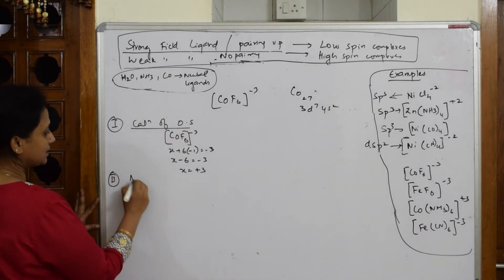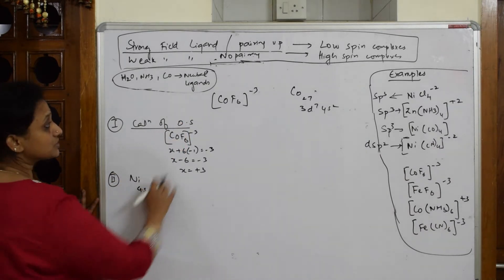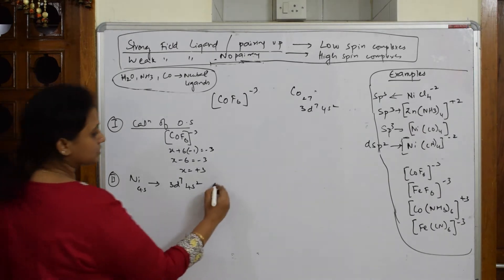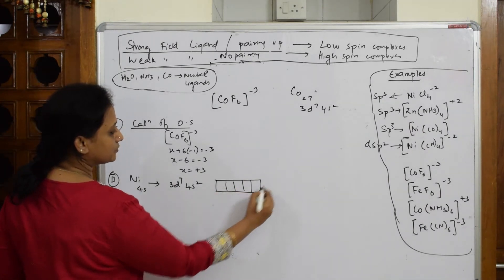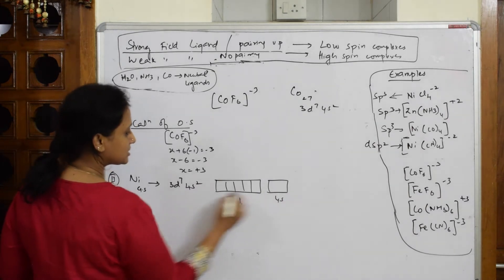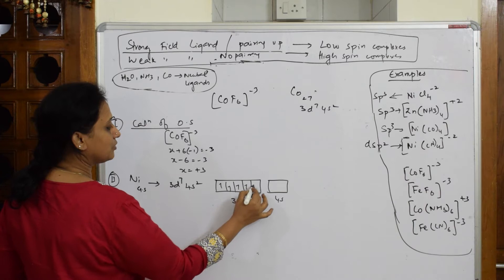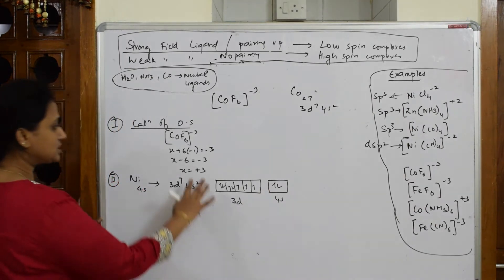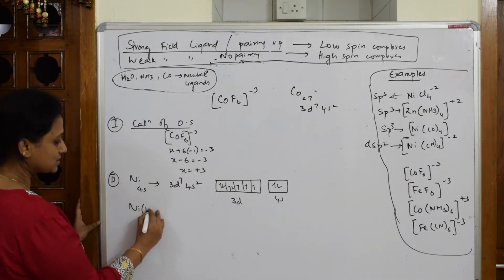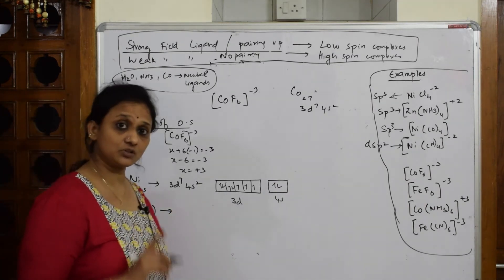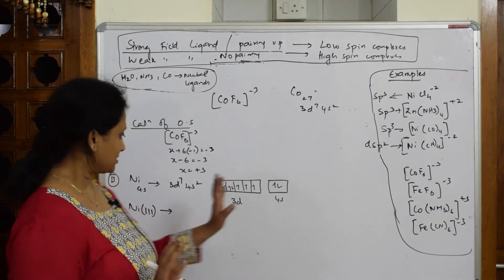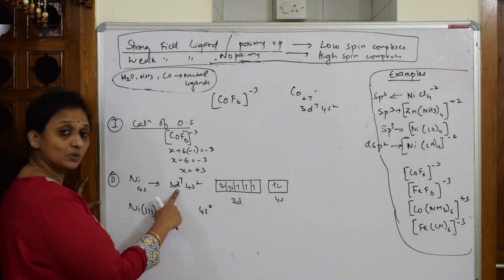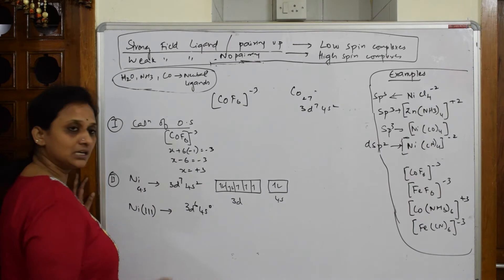Step 2: take nickel, write the ground state. What is the ground state configuration? 3d7 4s2. Now start drawing the orbitals: 1, 2, 3, 4, 5, and 4s. This is 3d, this is 4s. Seven electrons: 1, 2, 3, 4, 5, 6, 7. Fill according to Hund's rule. 4s is 2. Now what is oxidation state? Plus 3. So nickel plus 3 is oxidation state. Now I have to take out electrons.